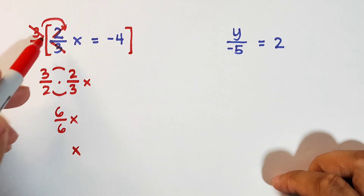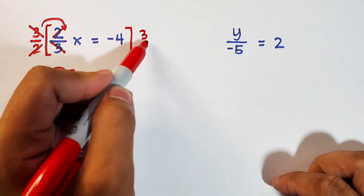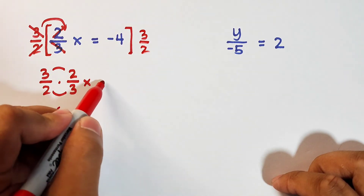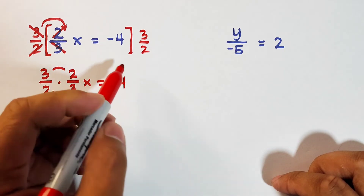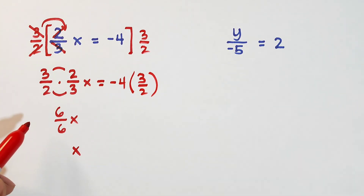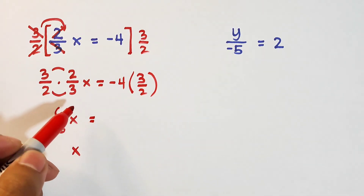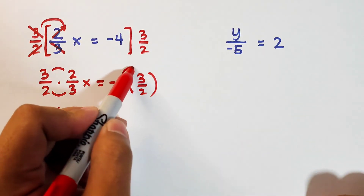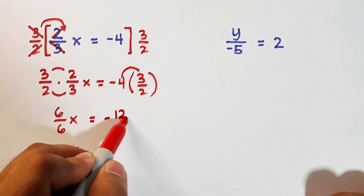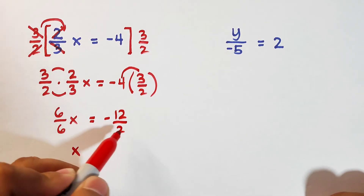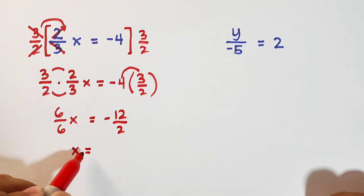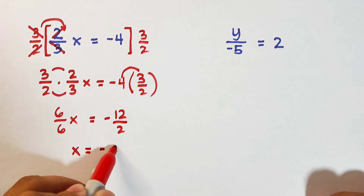Don't forget, you also need to multiply the right side by 3 over 2. So we have negative 4 times 3 over 2. When you multiply this, it is negative 4 times 3, which is negative 12, over 2. Simplifying negative 12 over 2, the value of x is negative 6.